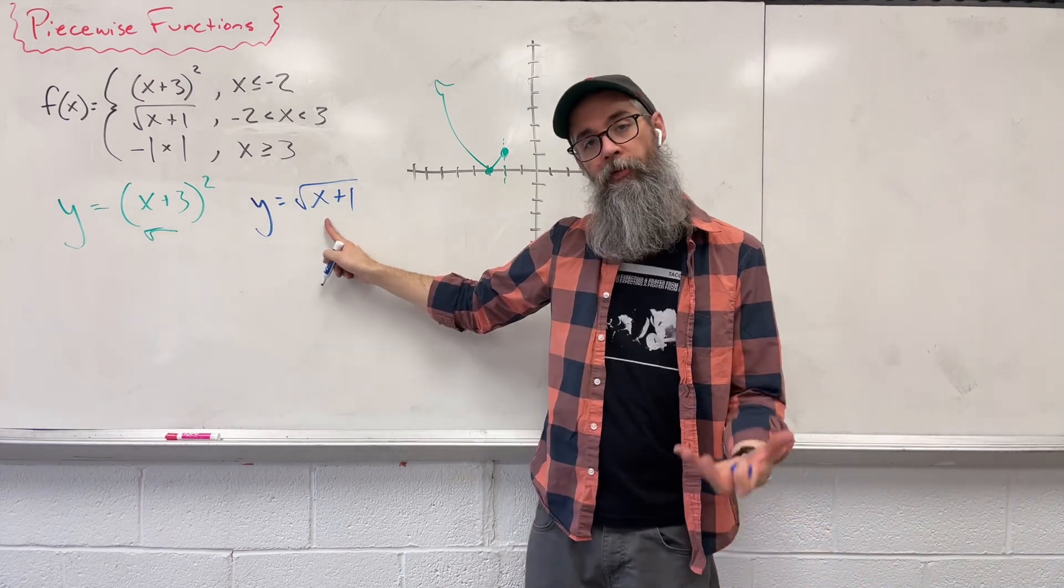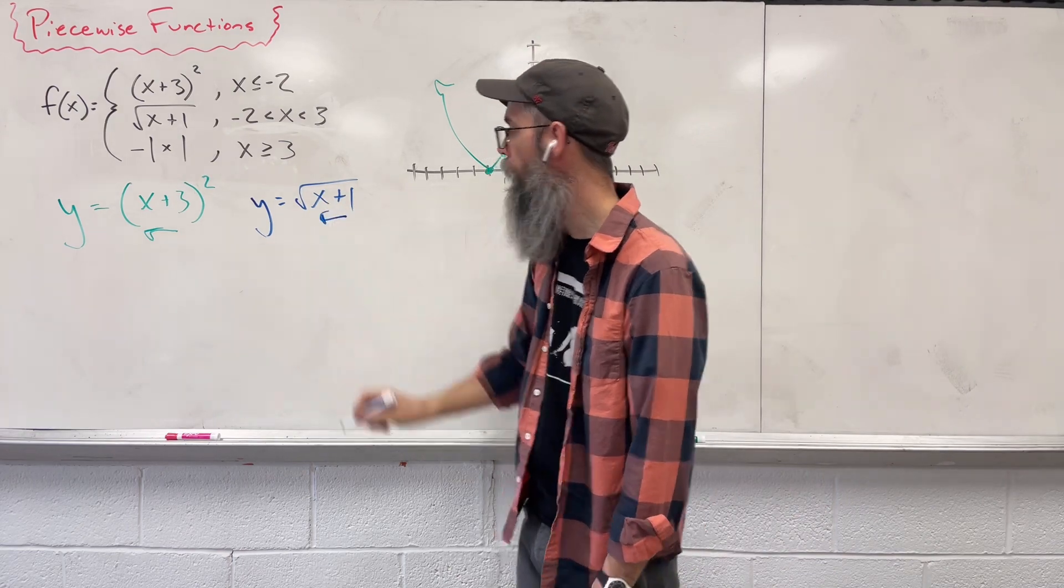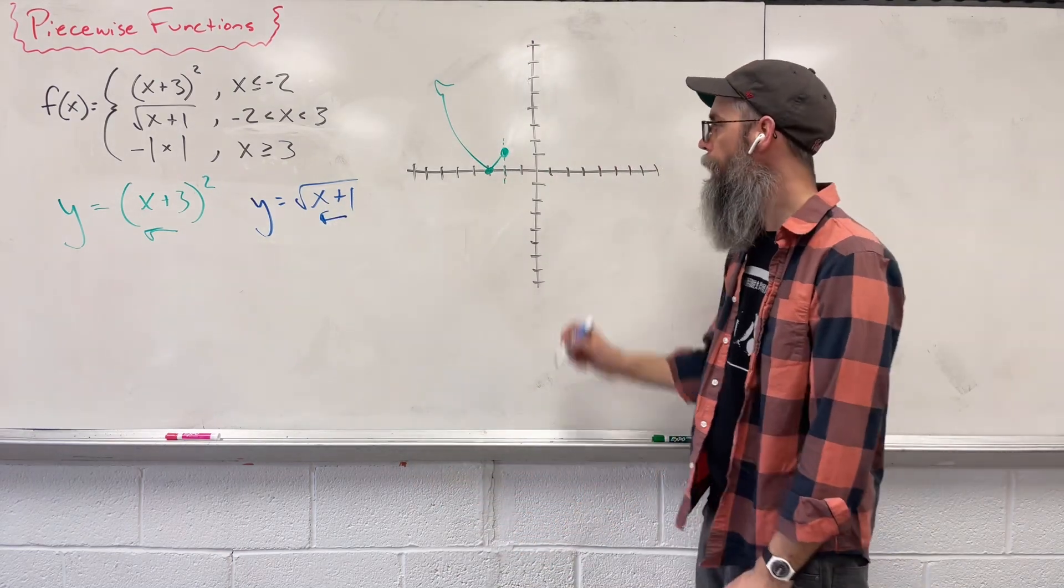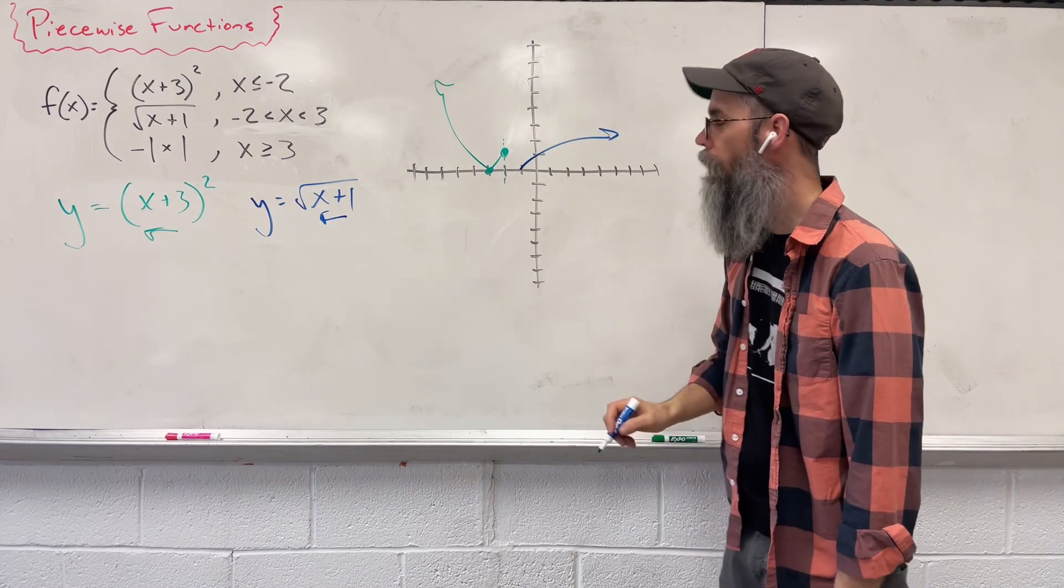So this follows the same transformation rule. Inside here, I have a plus 1. That means I'm shifting this whole thing back 1. So instead of starting at the origin, we move back 1 and there you go.